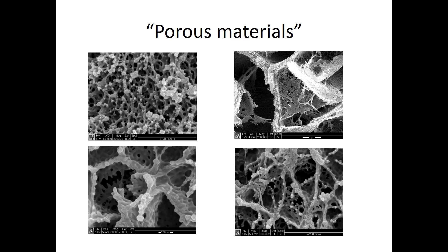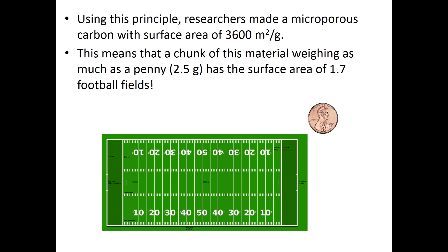Using this principle, researchers made a microporous carbon with a surface of 3,600 meters squared per gram. This means that a chunk of this material weighing as much as a penny, 2.5 grams, has a surface area of 1.5 football fields.